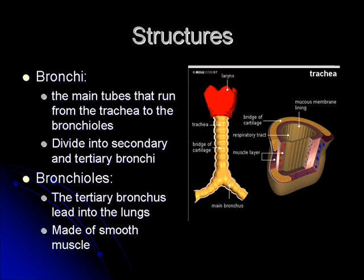Bronchus is the singular form; the trachea leads to one of two bronchi — bronchi being the plural. These are the main tubes that run from the trachea into the bronchioles. Since it branches off into two bronchi, each one goes into either your right or your left lung.